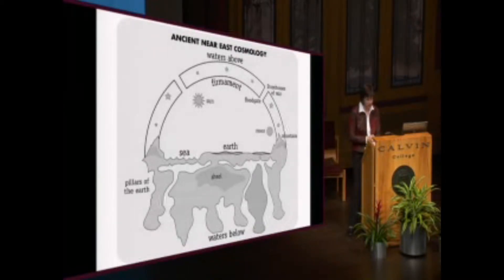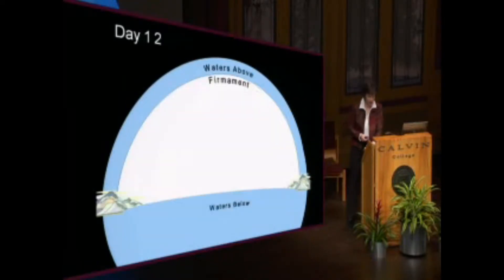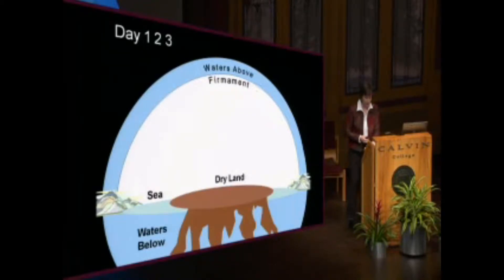This same picture appears in Genesis 1. The earth began formless and void; darkness was over the waters. On day 1, God separates light from dark. On day 2, God separates water below from water above with that solid dome firmament. And on day 3, God separates the chaotic waters from the dry land.